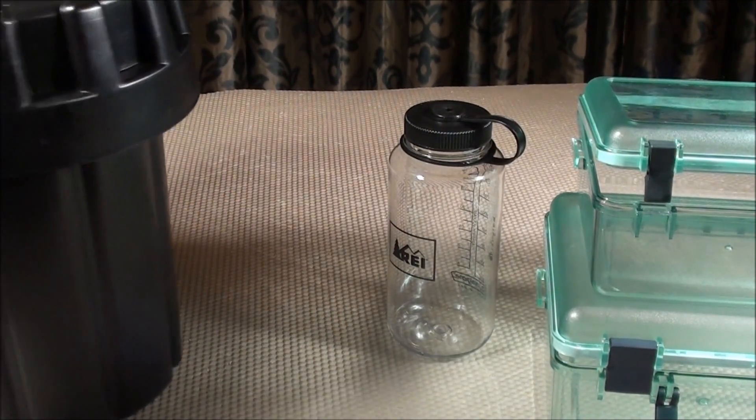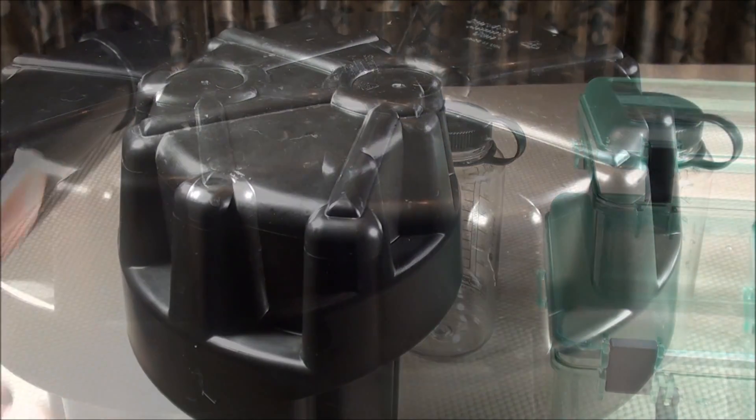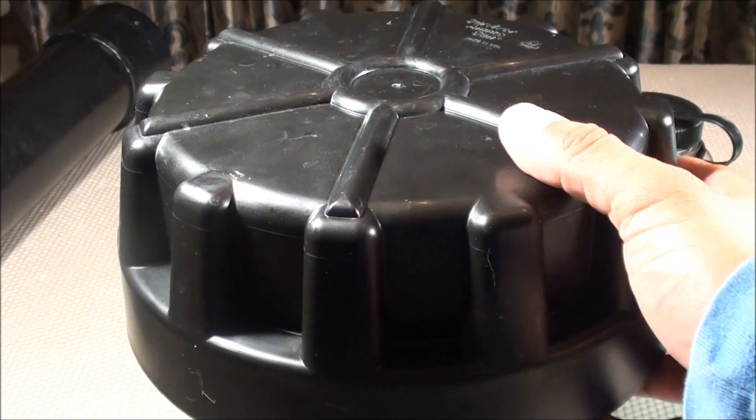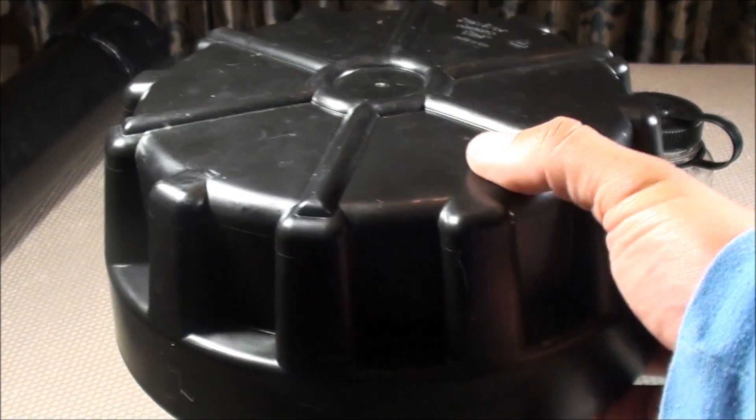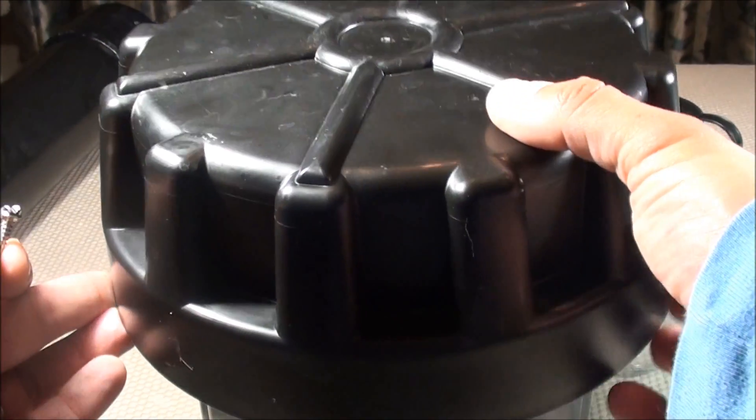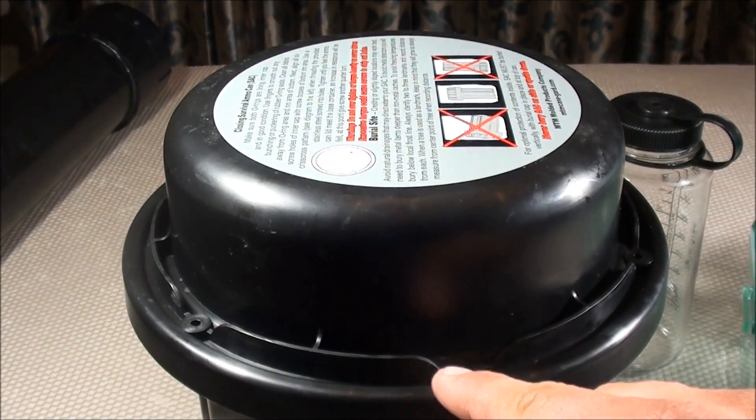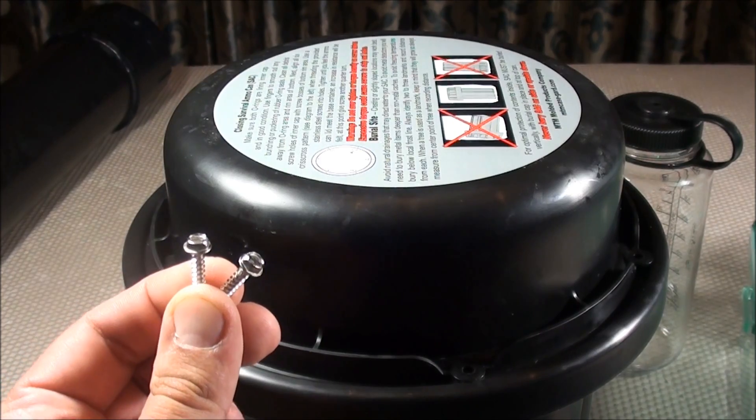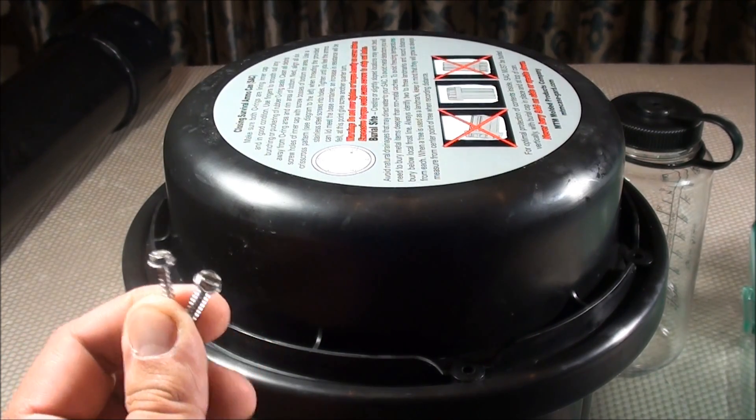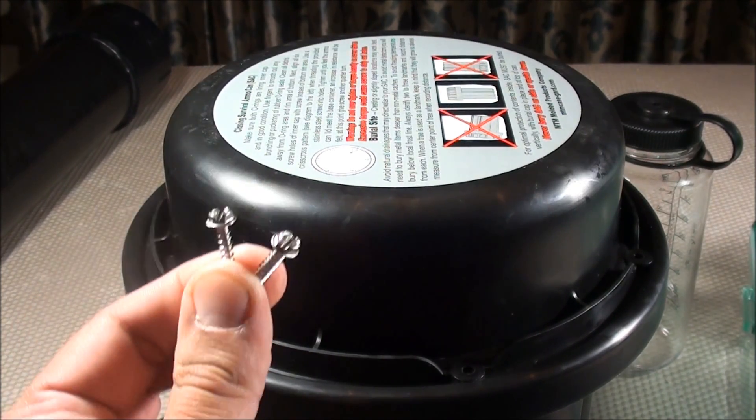Let's start off first with the survivor ammo can. As you saw on the water test the survivor ammo can is definitely not completely waterproof. If it gets on its side or upside down it's going to get water inside of the lid and as you remember inside of the lid here it has six screw areas so you have multiple screws that could possibly get wet and over time rust would appear on these screws.